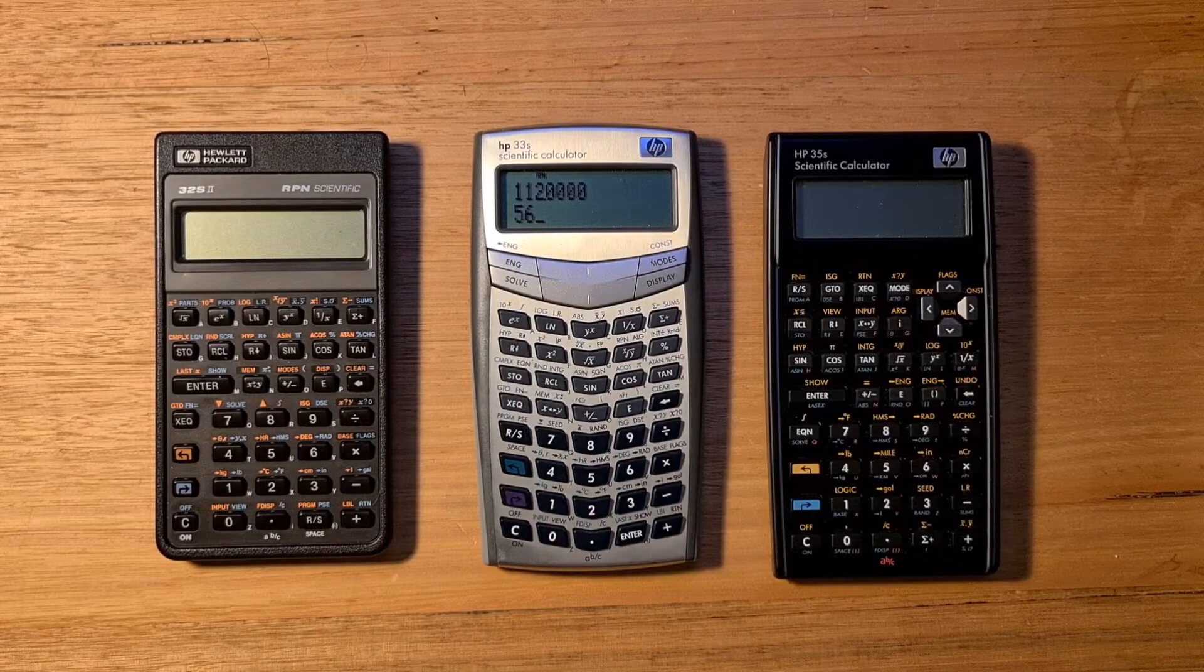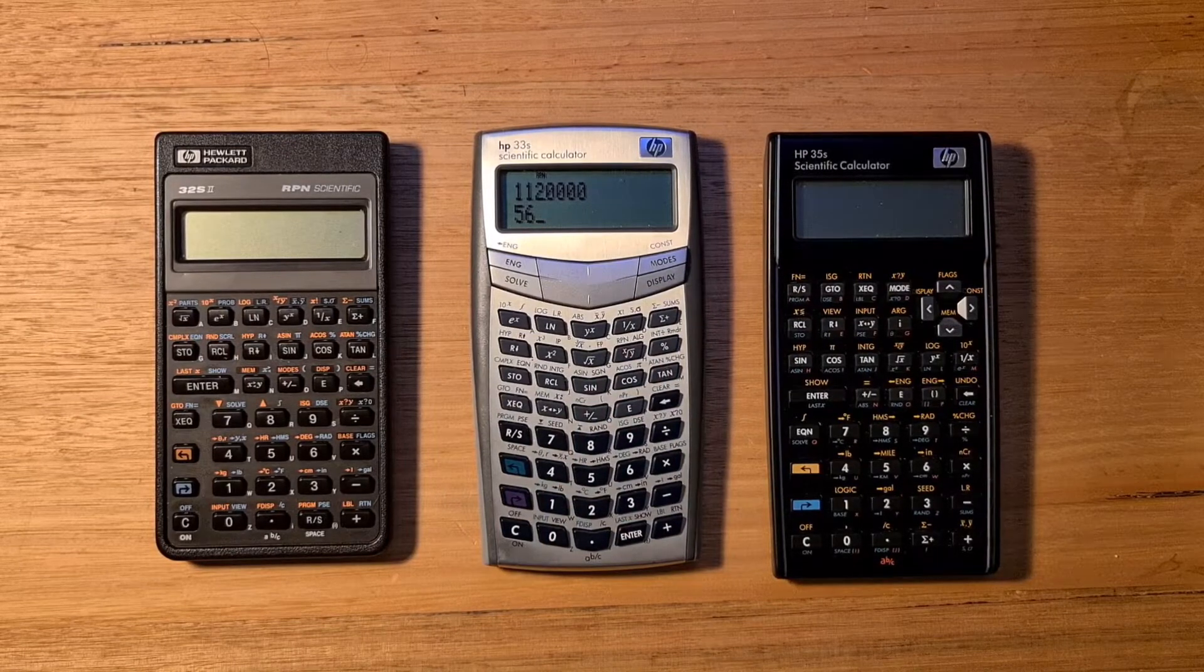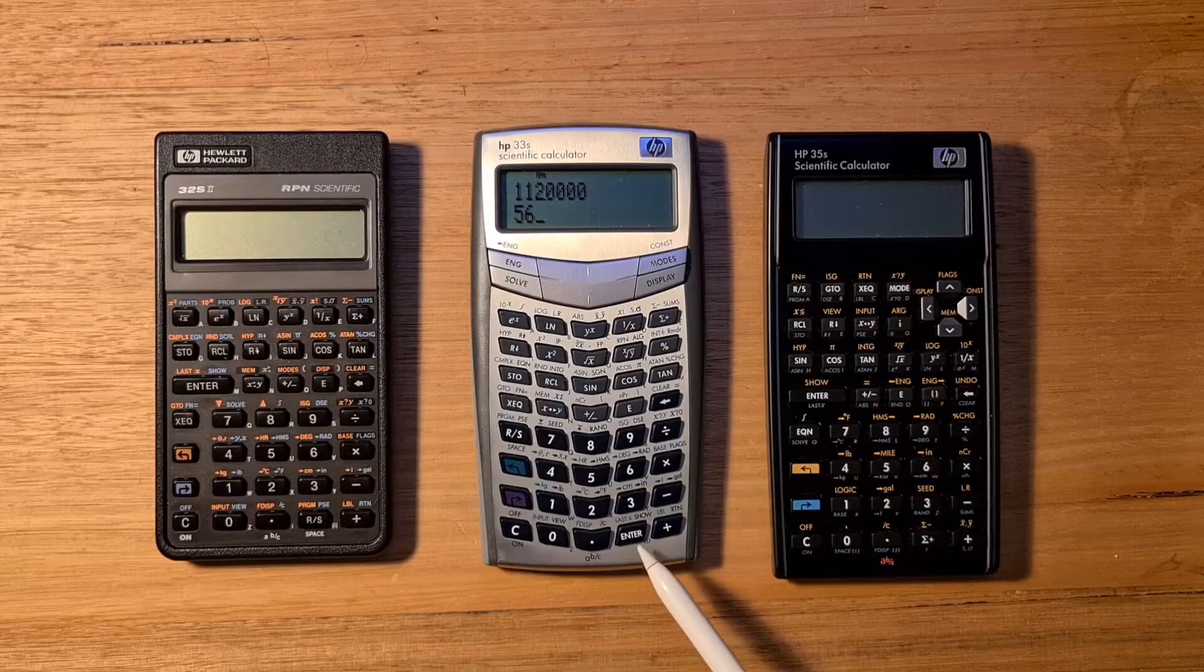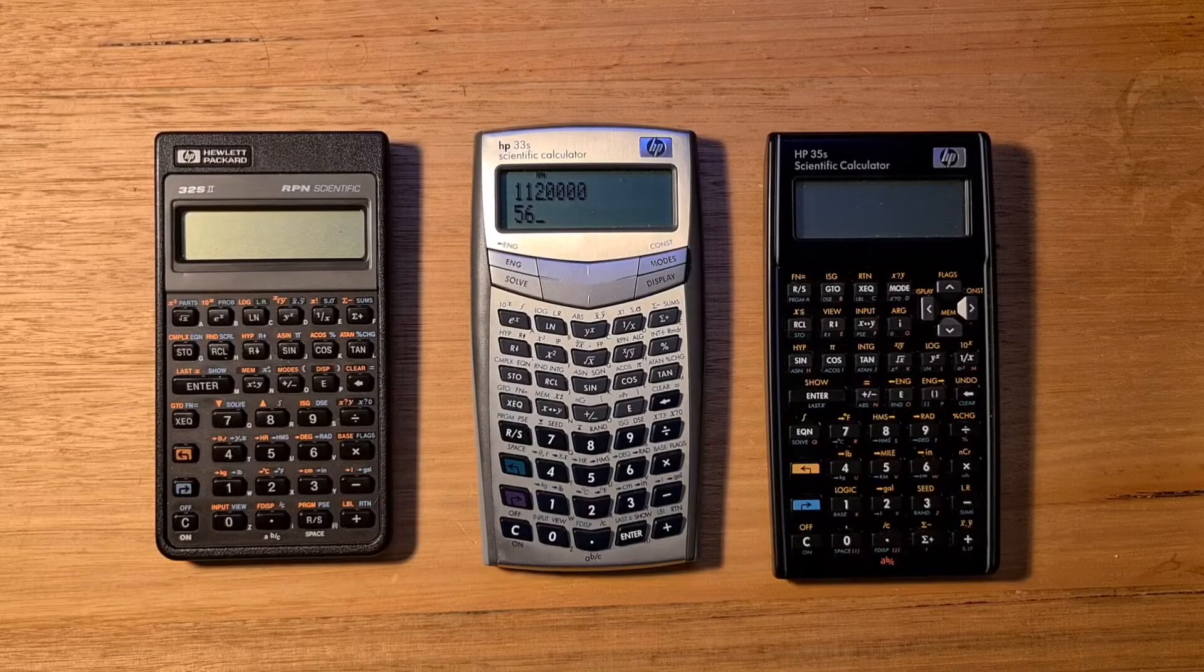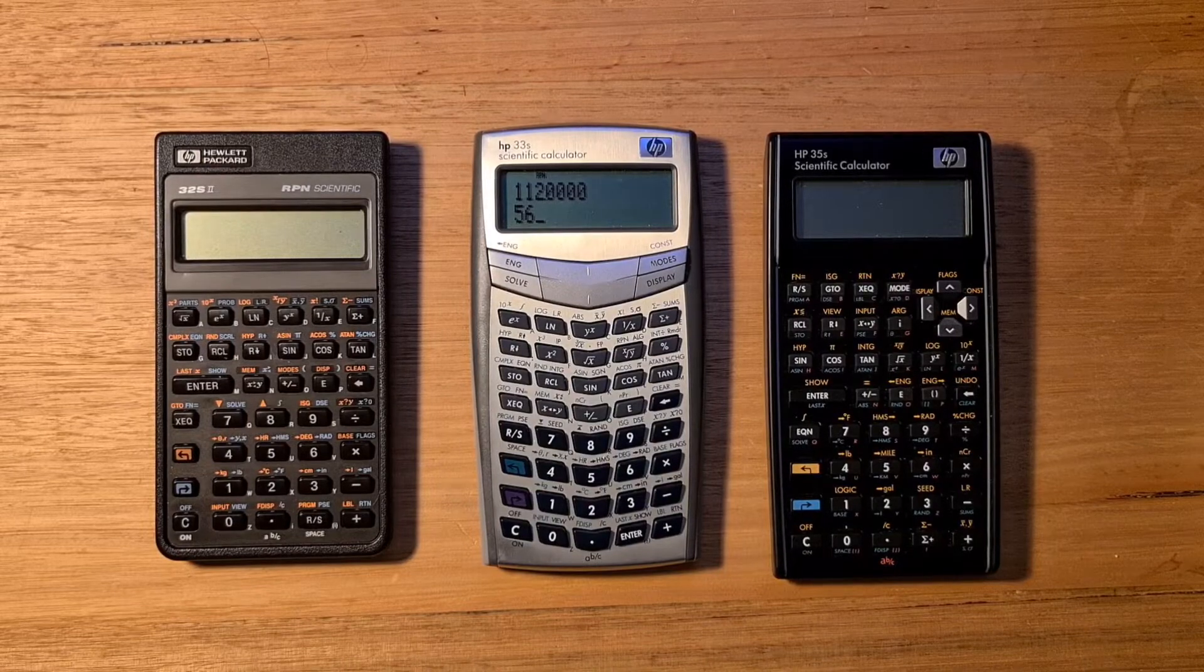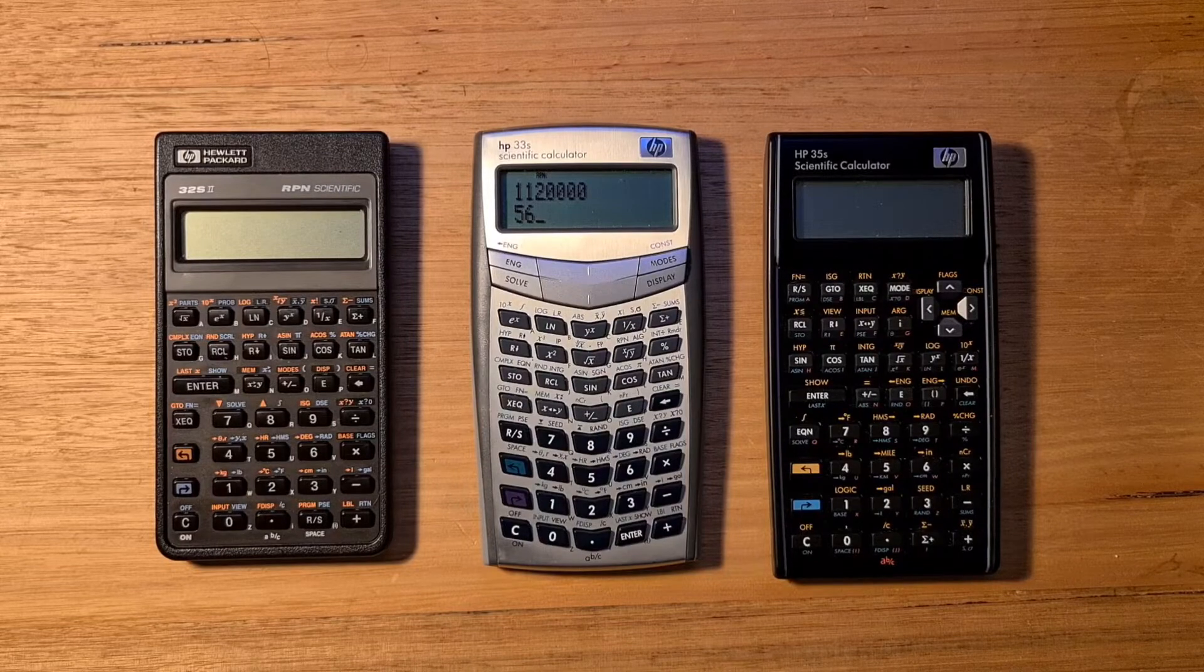Another notable design feature of the 33S was its regular size enter key. This was quite a departure for an HP RPN calculator, and maybe it was partly an artefact of the calculator's new support for algebraic entry.